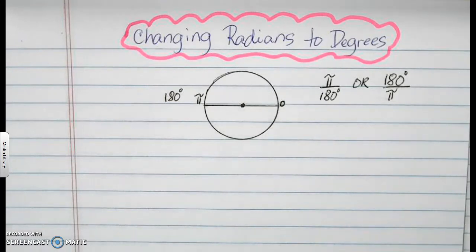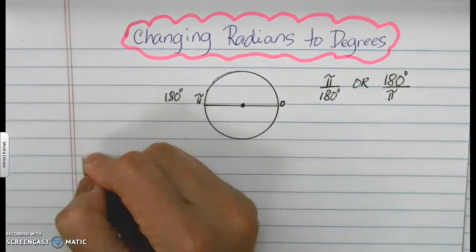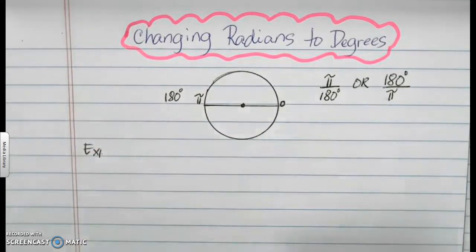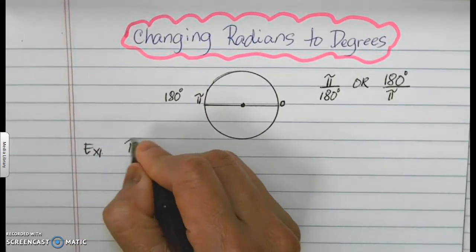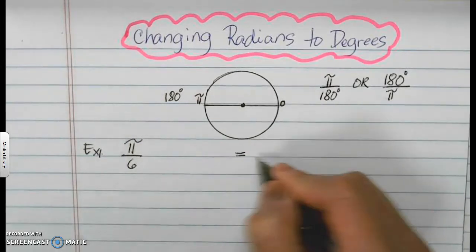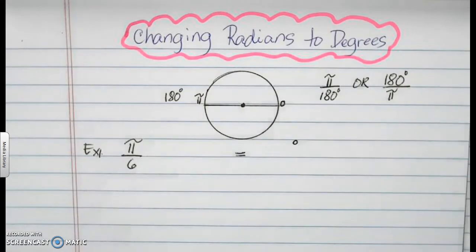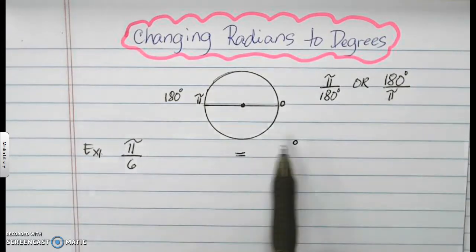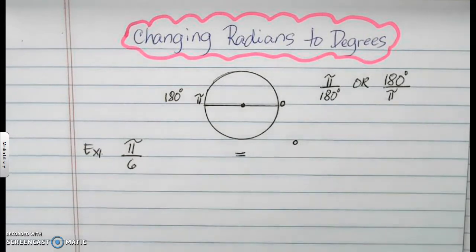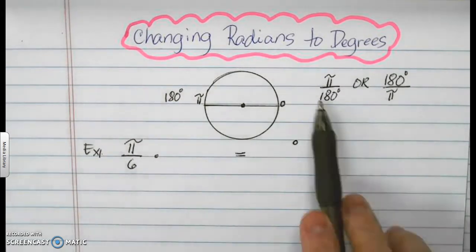So let us have the first example. Example number one. Our first example is pi over 6. We want pi over 6 to turn into something with degrees. So because you want to turn it into something with degrees, this pi has to go away. So without me changing the value, I will multiply this by 1 in the form of any of these two.